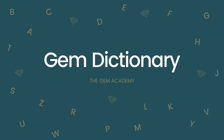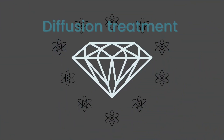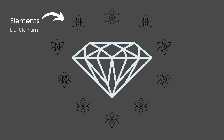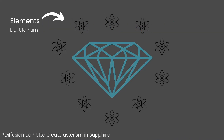Welcome to the Gem Dictionary by the Gem Academy. Diffusion treatment refers to diffusing elements into a gem to change its colour.